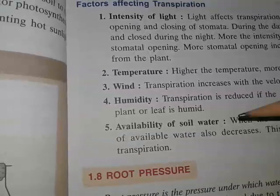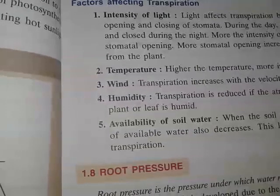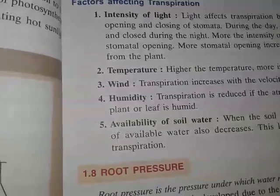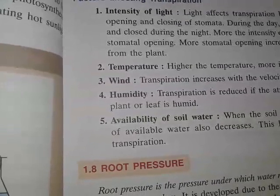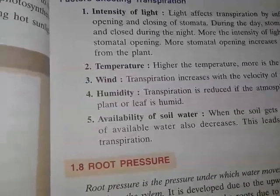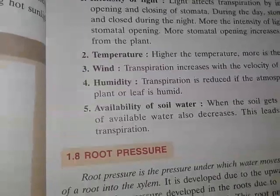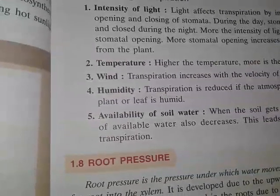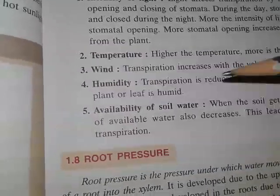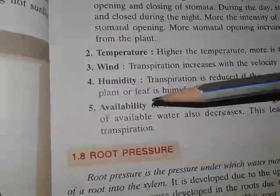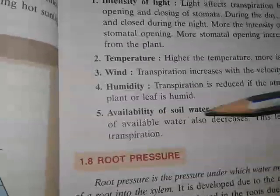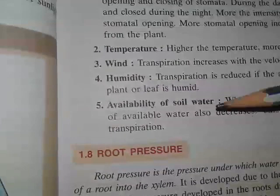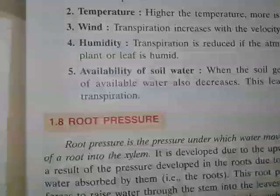Humidity is also a factor. When the atmosphere outside the plant or leaf is humid, transpiration is reduced — just like in evaporation, when the condition is humid, your cloth will not dry. So when the atmosphere is very humid, transpiration is also reduced. The fifth and last factor is availability of soil water: when the soil gets dry, the amount of available water decreases, which leads to a reduction in transpiration.